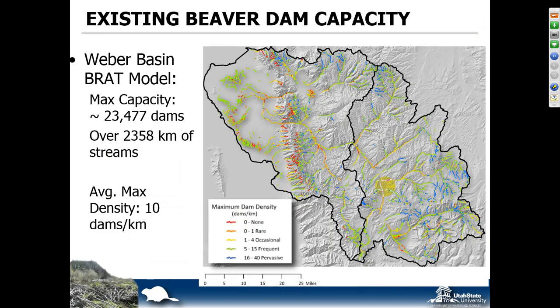I'm going to show you a couple of examples of how we can put this into play. This example is from the Weber Basin in Northern Utah. It's a basin that drains out to the Wasatch Front, which is heavily populated — up here is Park City. The existing capacity model says the network in its current condition can support up to 23,000 dams. We would never expect a system to be at full capacity, but that's the upper end. In the best situations, we see small watersheds achieving somewhere between 30 and 50% of that capacity estimate, working out over this 2,300 kilometers to a dam density of about 10 dams per kilometer.